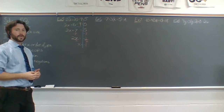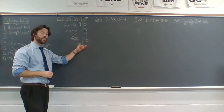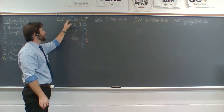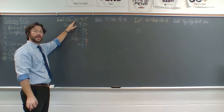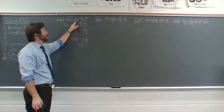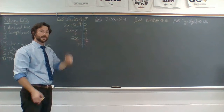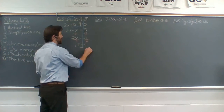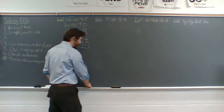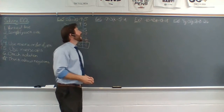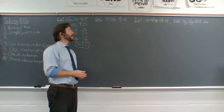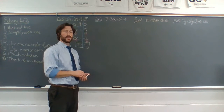So we have x equals negative 1. We can take that negative 1 back to the original and check: negative 1 plus 8 is 7, 2 times 7 is 14, 14 minus 9 gives us 5. So the solution checks out. Next up, we have negative 7 equals 3 times the quantity t minus 5, minus t.